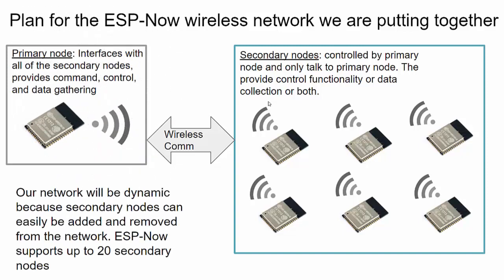Our network is going to be dynamic — in real time we can add or delete secondary nodes. Maybe you start with a couple of nodes and build the network bigger, or you want to monitor something somewhere and then switch. Maybe your secondary nodes are battery-powered, so when the battery runs out it goes dead, you charge it and throw in a different node. That's what I mean by dynamic.